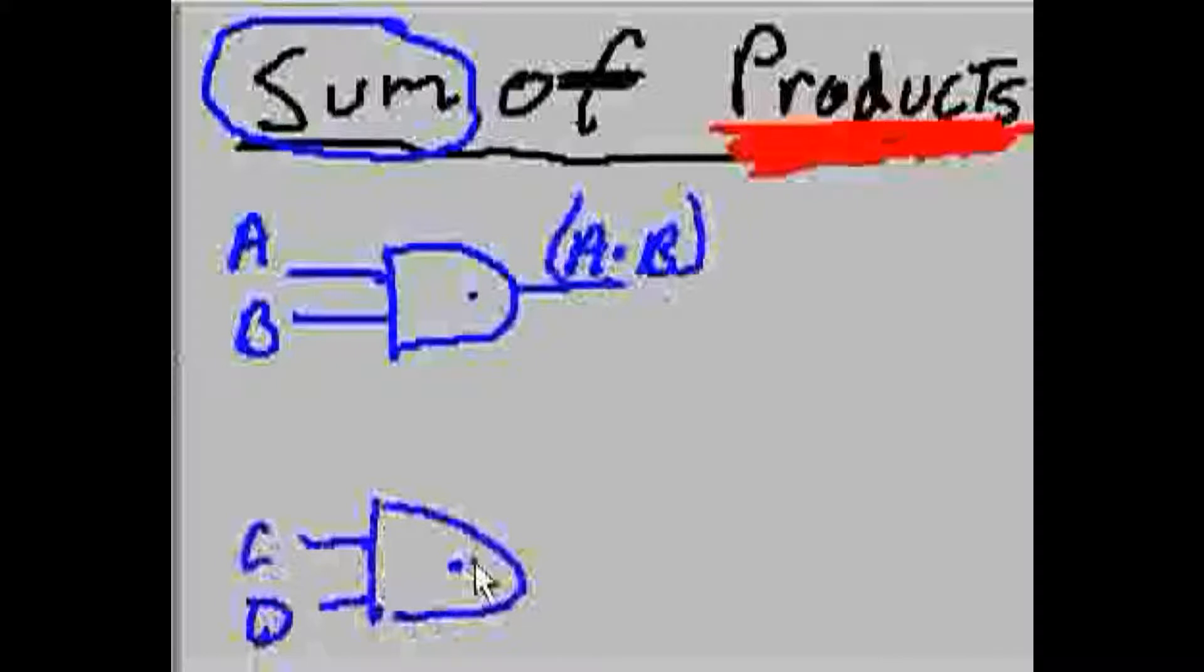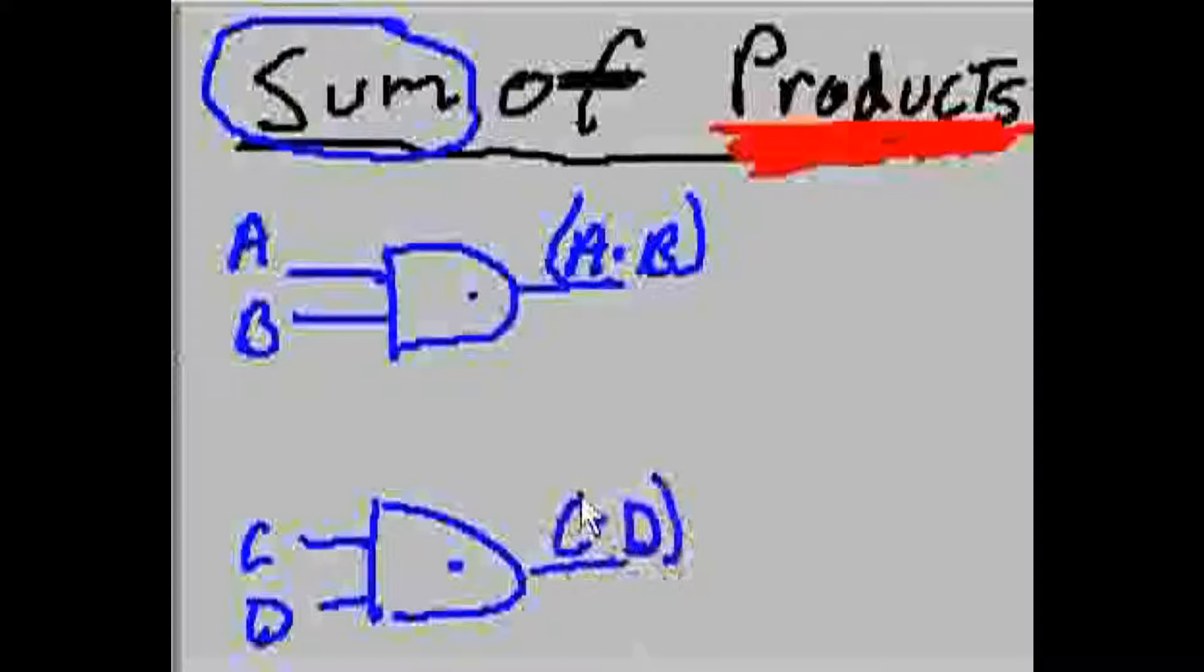Now, it's also being ANDed together. What's the output of this guy? Well, the output of this guy is C anded with D. So, you have two products here. Now, we take these outputs and we put them into an OR gate.